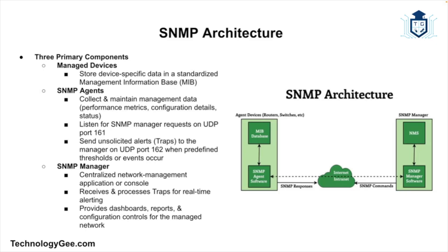The SNMP architecture comprises three primary components. The first component is managed devices — these are network nodes that contain an SNMP agent and reside on a managed network. Examples include routers, switches, servers, workstations, printers, and other devices. The second component is SNMP agents, which are software modules running on managed devices that collect and store management information.